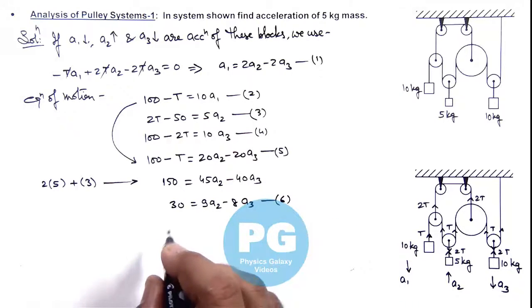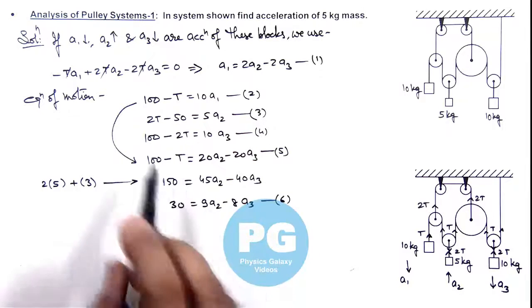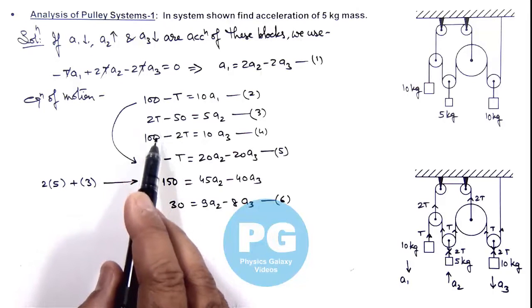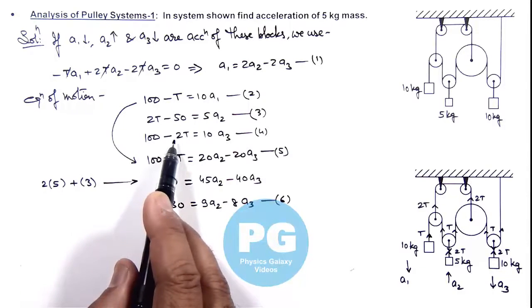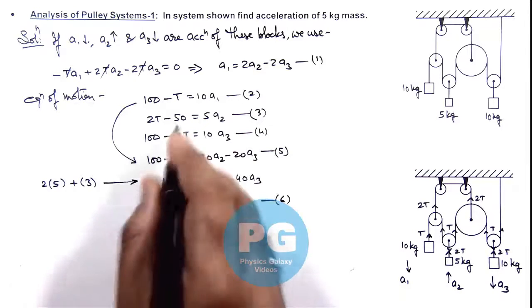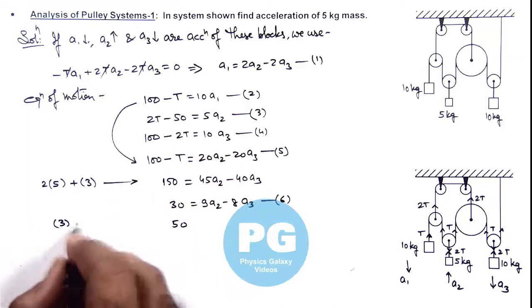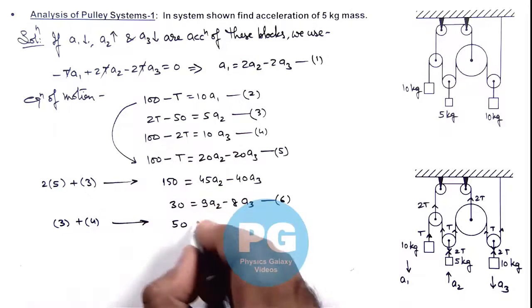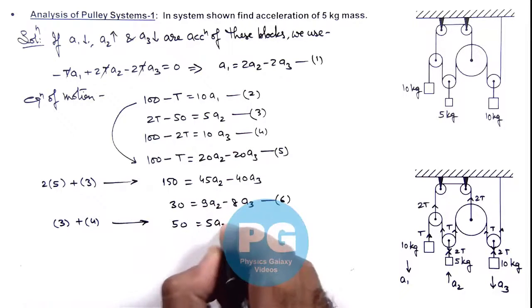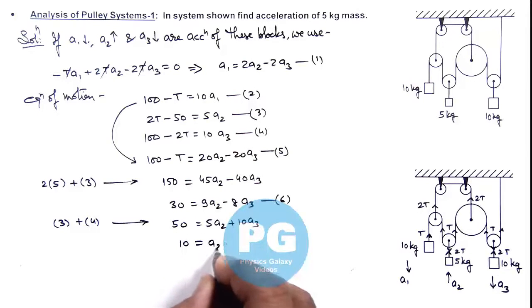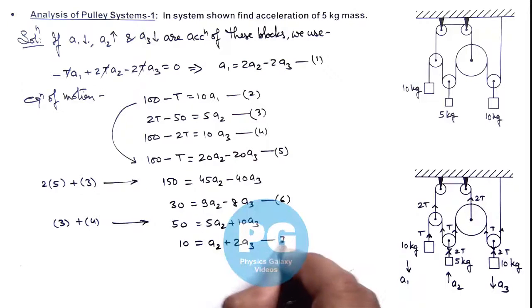If we add equations 3 and 4, the 2T terms cancel out. We get 100 minus 50 equals 50 on the left, and 5a_y2 plus 10a_y3 on the right. Simplifying gives 10 equals a_y2 plus 2a_y3. This is equation 7.